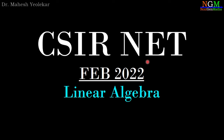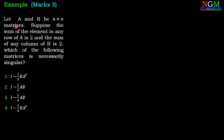In this video, we are going to discuss the problem of CSIR-NET February 2022, Problem of Linear Algebra. The question is: let A and B be n cross n matrices. Suppose the sum of elements of any row of A is 2, and the sum of any column of B is 2. Which of the following matrices is necessarily singular?